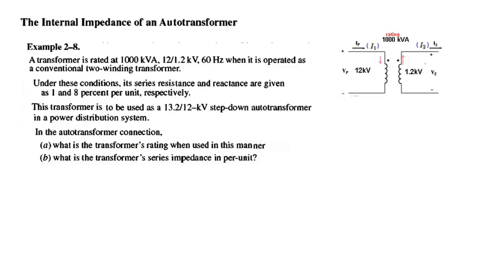Now a question about the internal impedance. A transformer is rated at 100 kVA, 12.1/1.2 kV, 60 Hz, when operated as a conventional two-winding transformer. Under these conditions, its series resistance and reactance are given to be 1 and 8% per unit respectively.